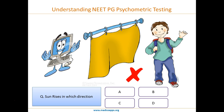This is important: just because the student got a very tough question right but is getting a very simple question wrong, the computer will correctly understand that he belongs to class 1 or class 2, or maybe even lower than that.